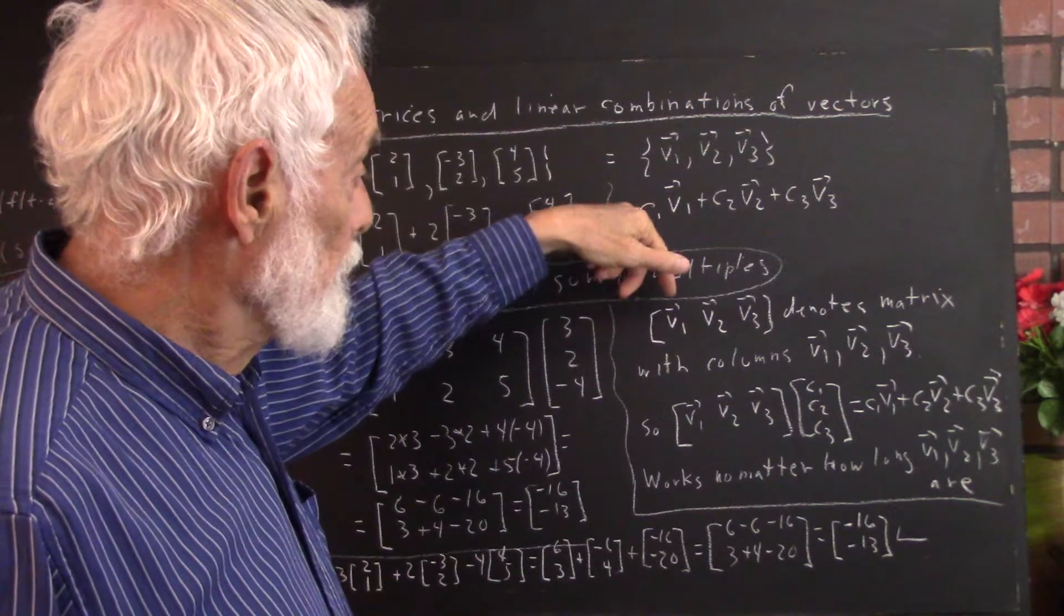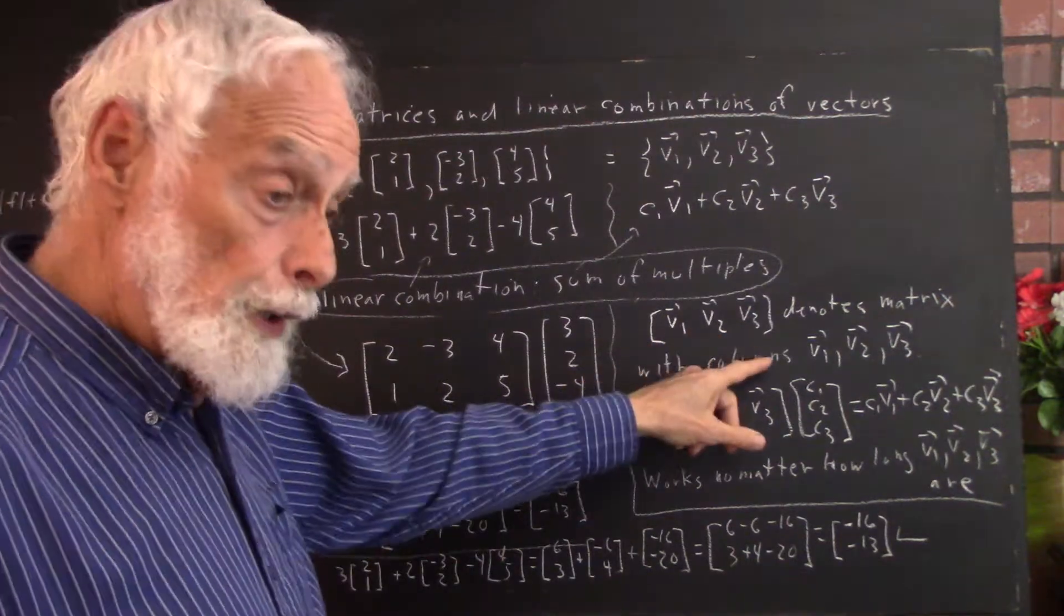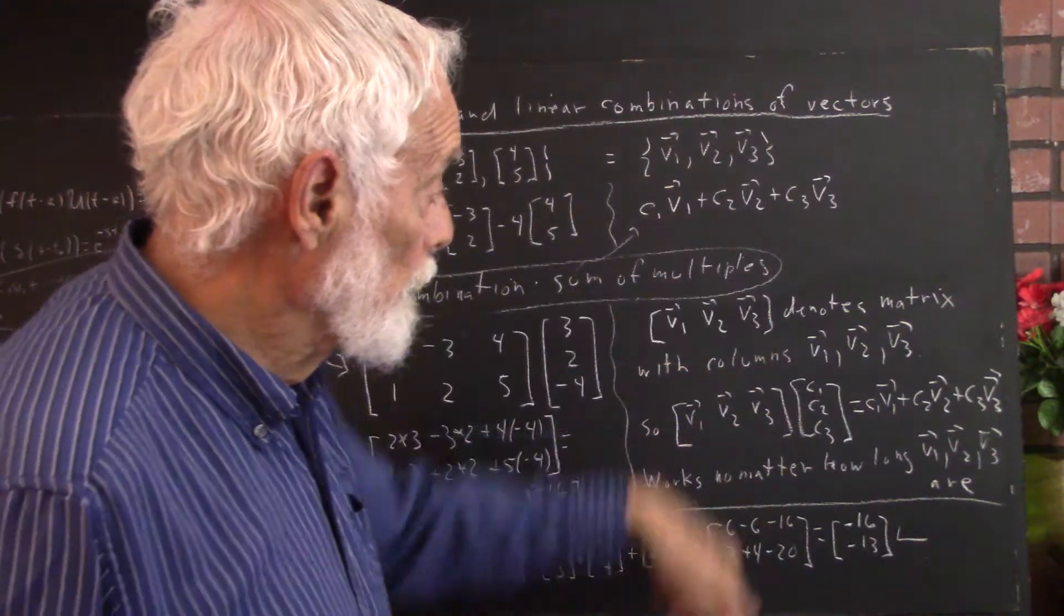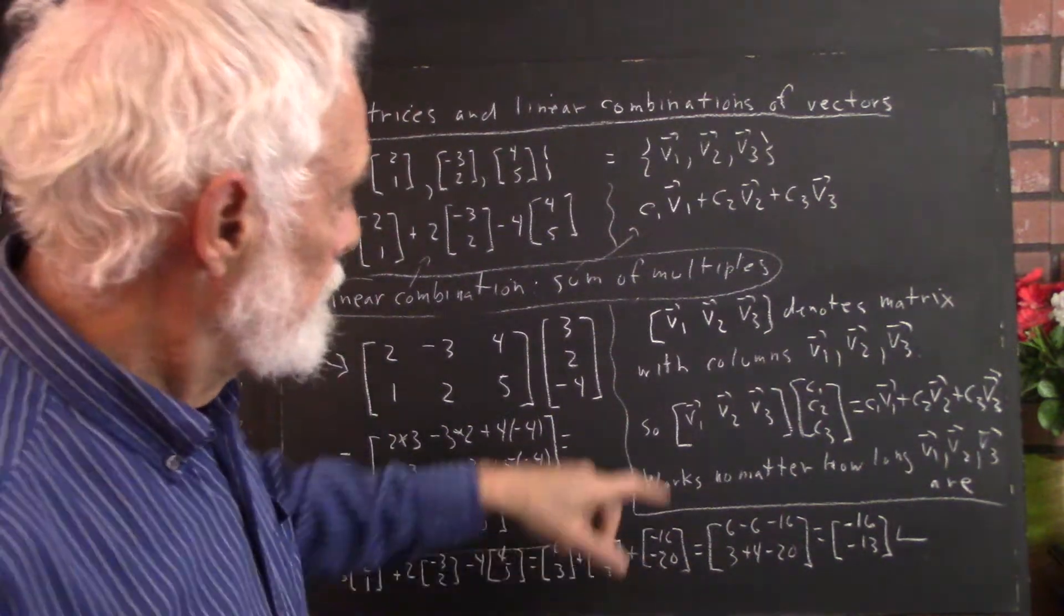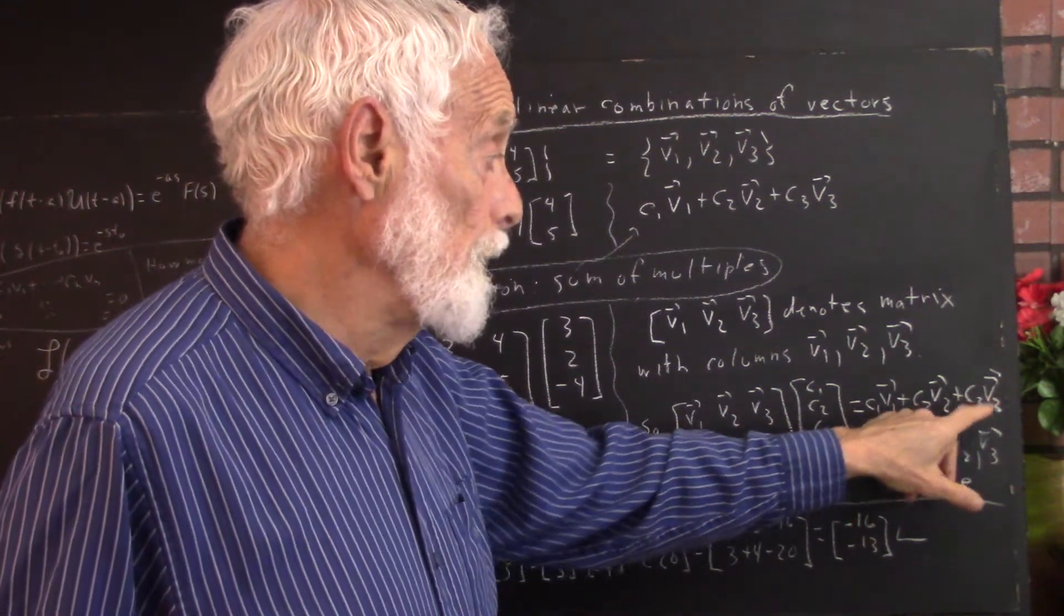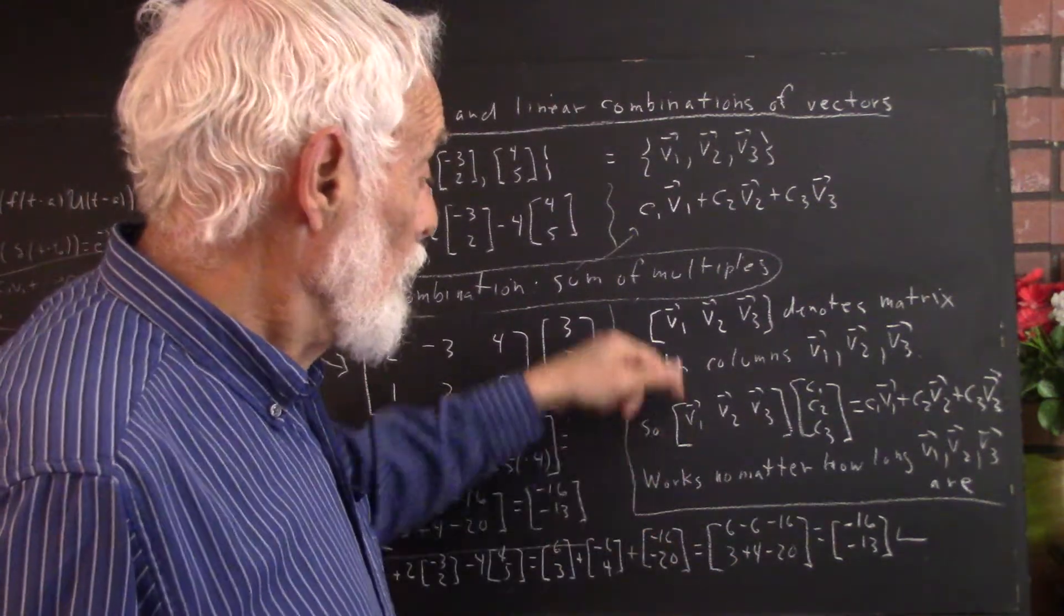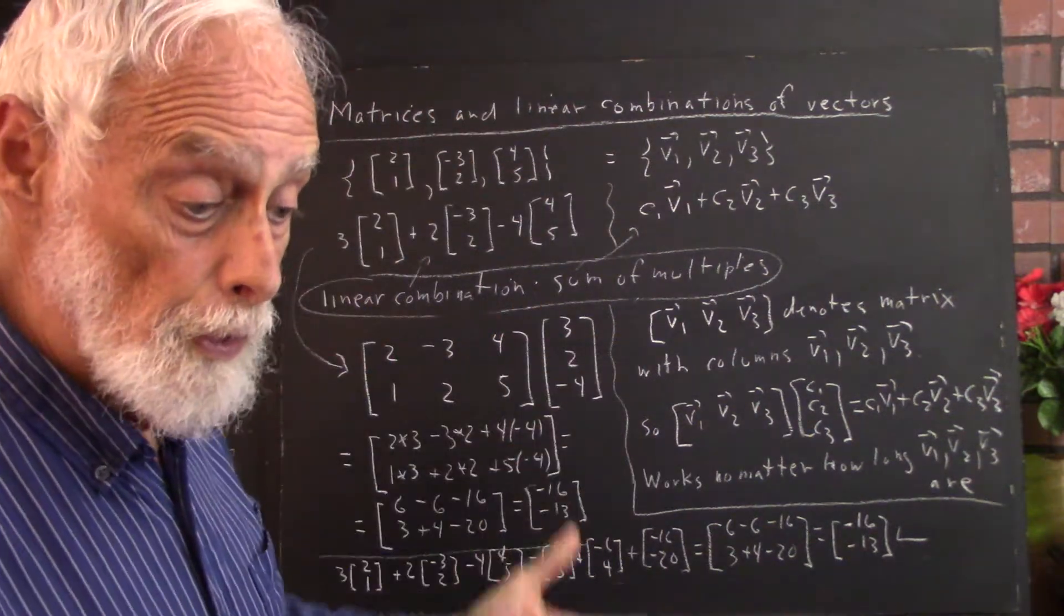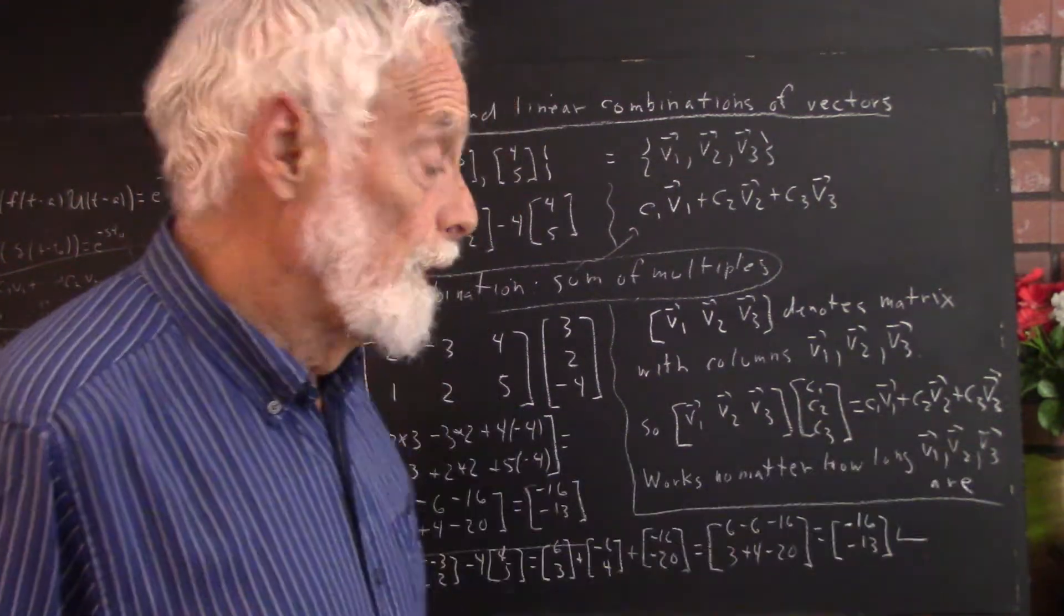Now, the column vectors. Well, v1 goes in the first column, v2 in the second column, v3 in the third column. This notation denotes that. v1 is the first column, v2 is the second column, v3 is the third column, just as v1, v2, and v3 here form the three columns. Then, this matrix product equals c1*v1 + c2*v2 + c3*v3. And now it doesn't matter how long these vectors are. These vectors are in R2. If we want to do three vectors in R3, the same symbol, the same expression, gives us that linear combination.